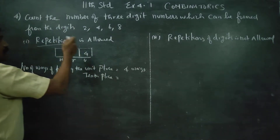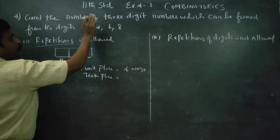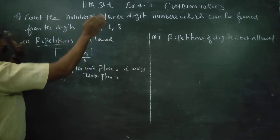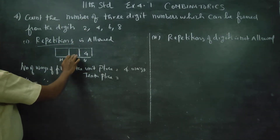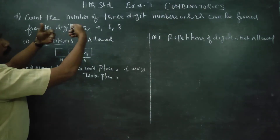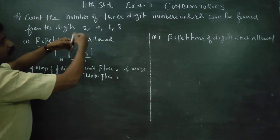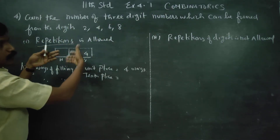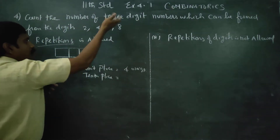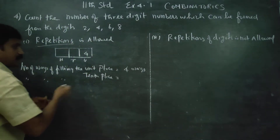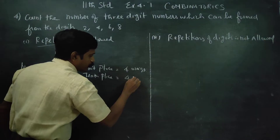Repetition is allowed. So even if a digit is used in a previous place, it is still available. The number of ways of filling the tens place is 4 ways.